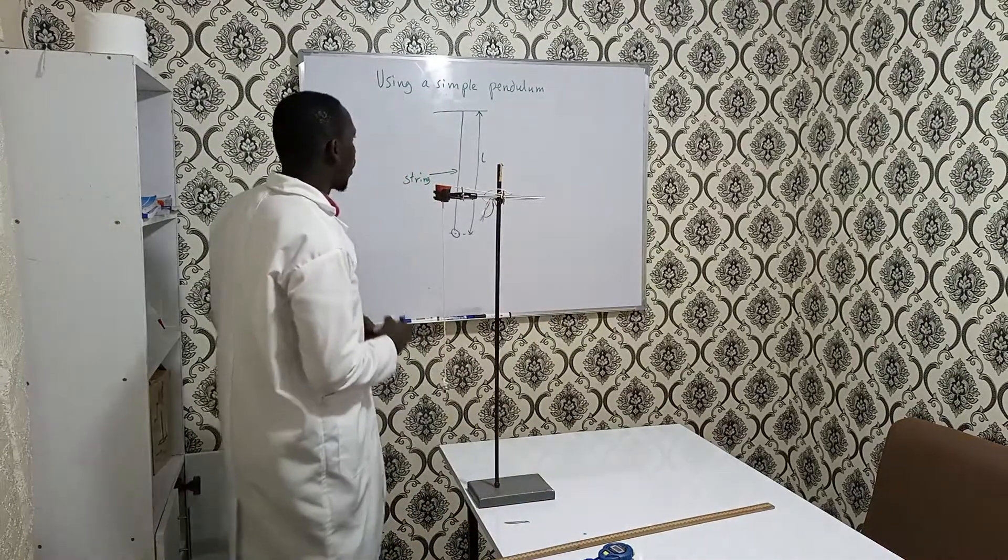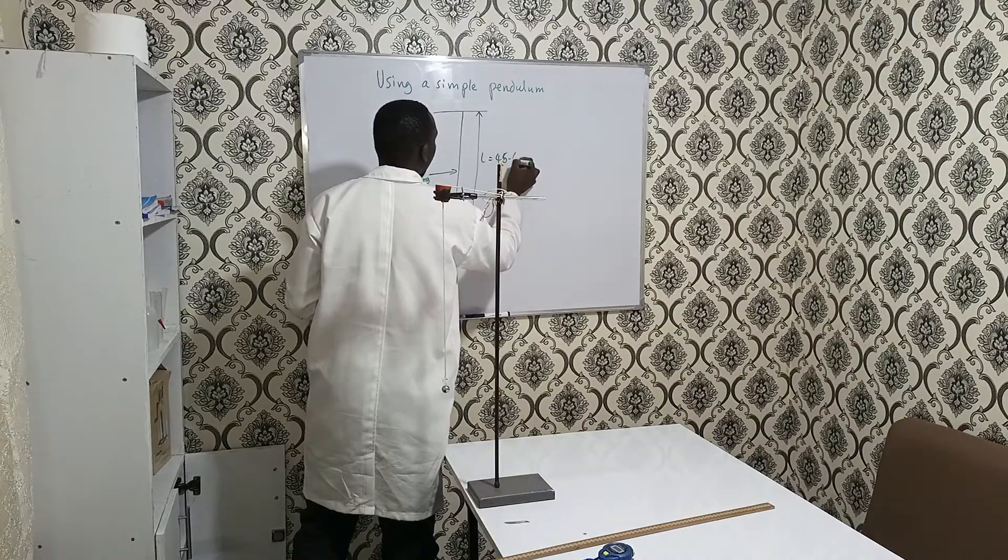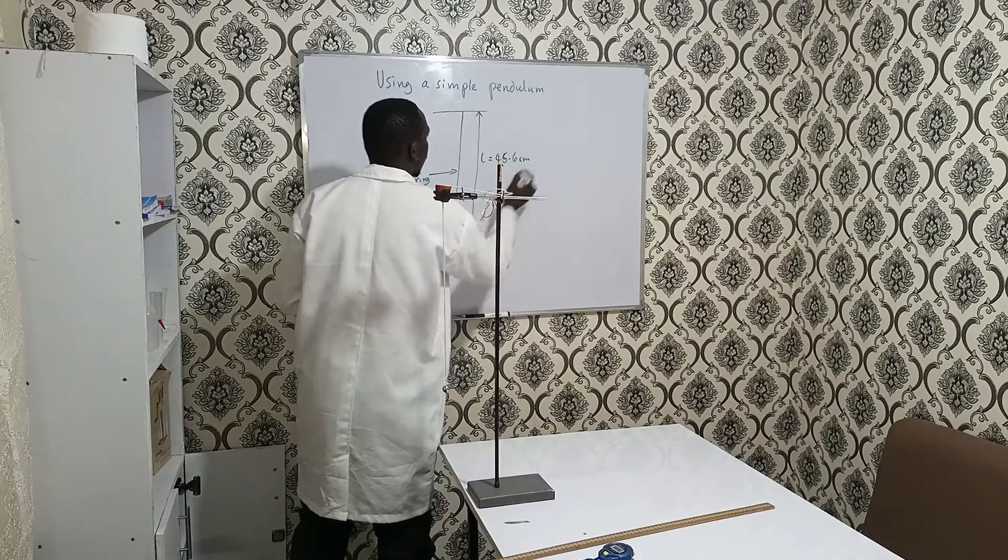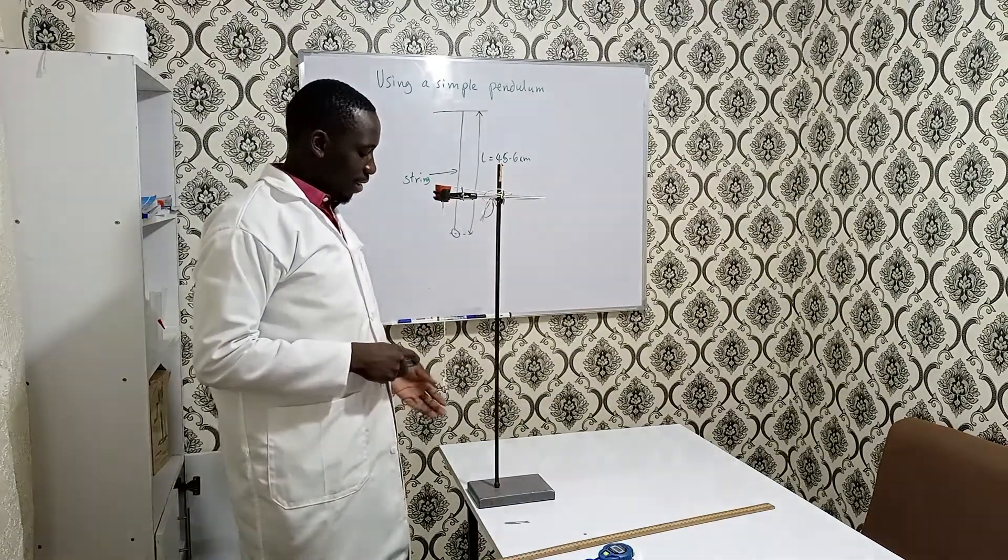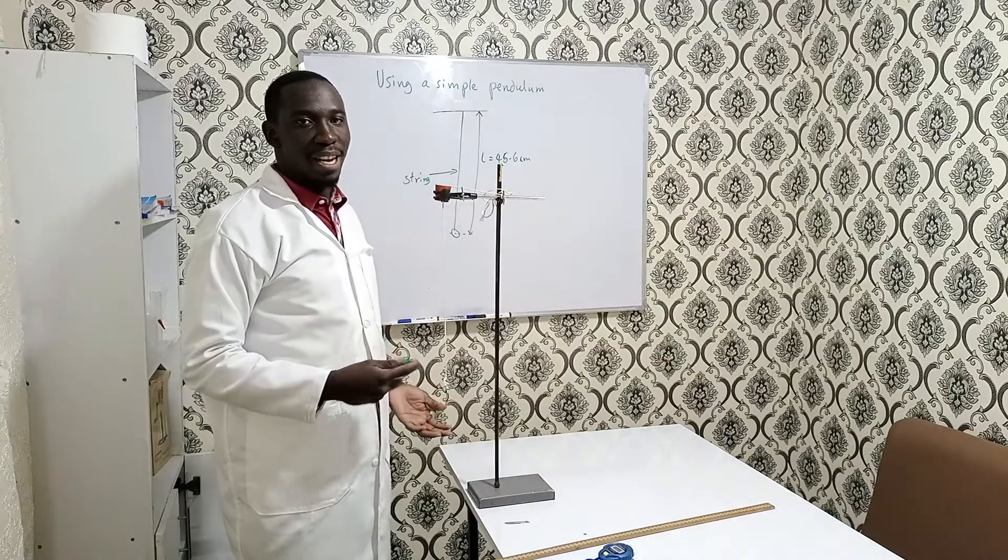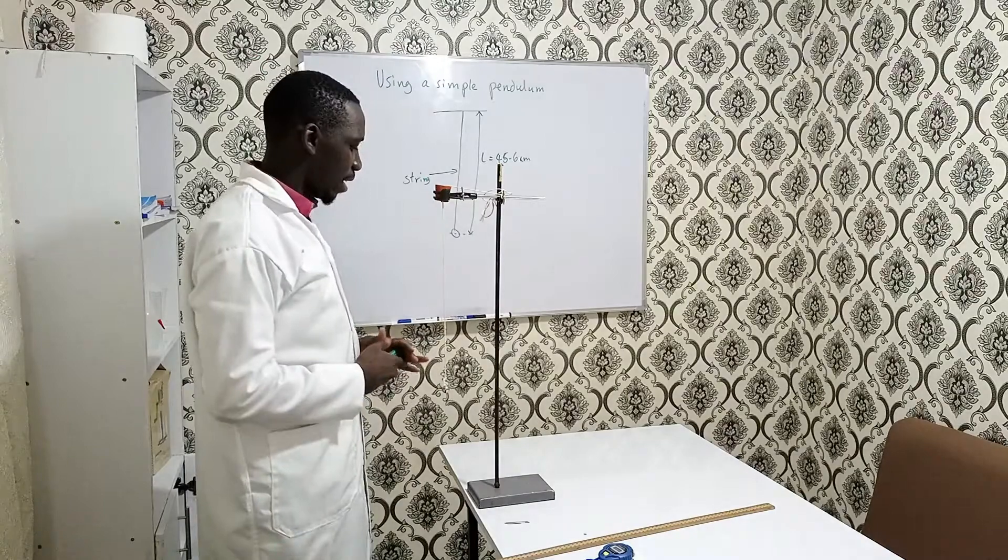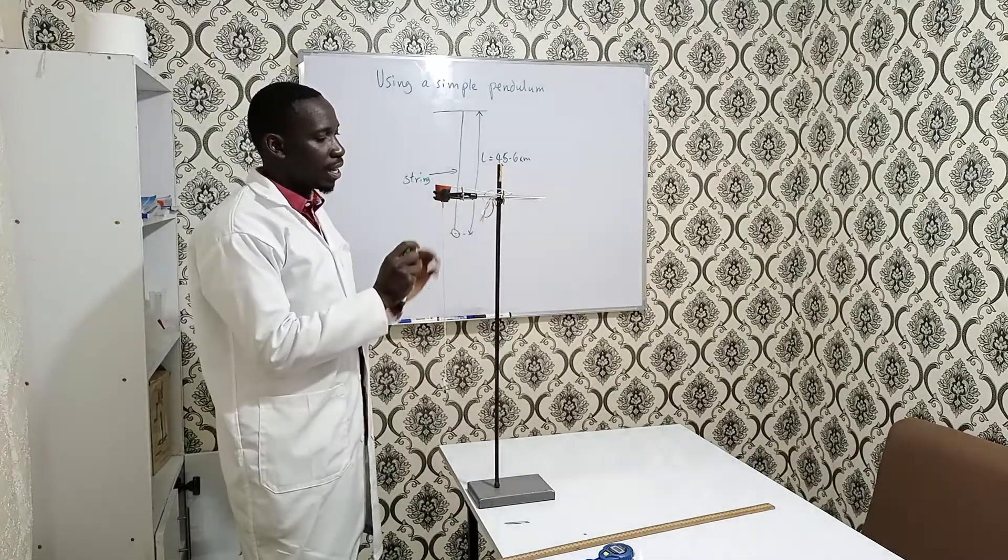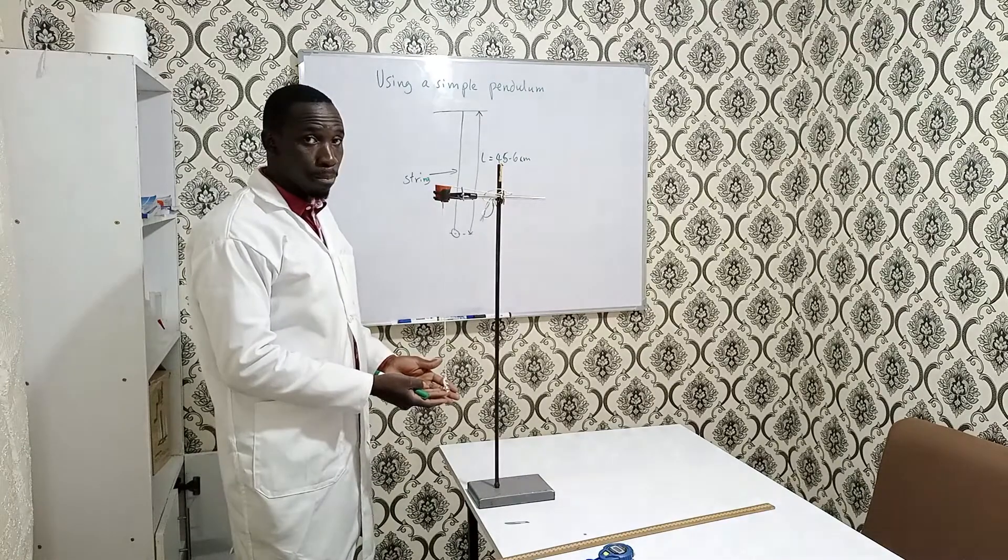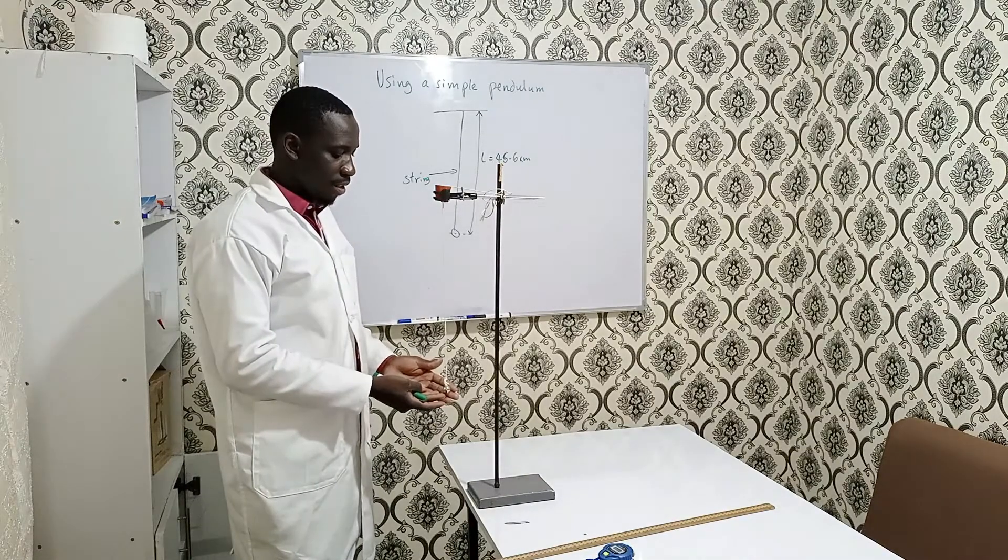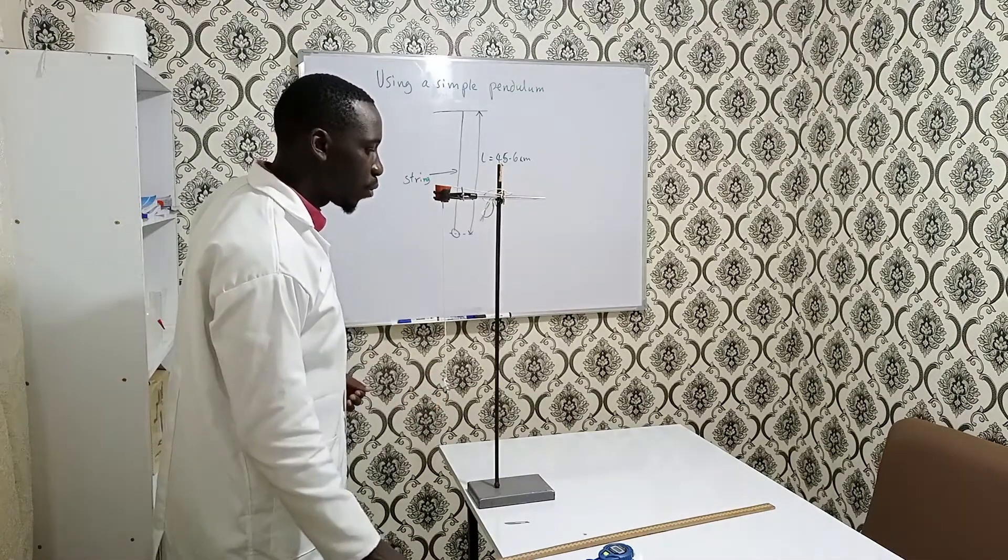For this case here, the length is 45.6 centimeters. In the experiment, one of the difficulties you can be asked is measuring the length of the string to the center of the bob can be just an approximation. That is why we need to take several measurements.